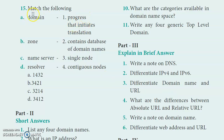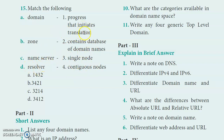Match the following: On side A - domain, zone, name server, and resolver. On side B - process that initiates translation, contains database of domain names, single node, and contiguous nodes. Domain is a single node; zone is contiguous nodes; name server contains the database of domain names; resolver initiates the translation. So the answer is option B - 3, 4, 2, 1.